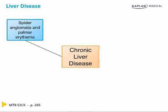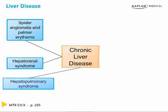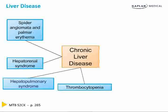The first complication is spider angiomata and palmar erythema. The next is hepatorenal syndrome, where a change in blood flow and vessel tone in the kidneys leads to renal failure. Hepatopulmonary syndrome is when the liver stops clearing vasodilators such as nitric oxide, leading to pulmonary edema, shortness of breath, and hypoxia. There's also thrombocytopenia, thought to be due to hypersplenism, with some evidence that thrombopoietin is interrupted in chronic liver disease.